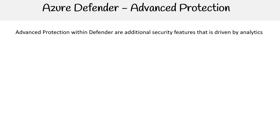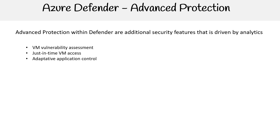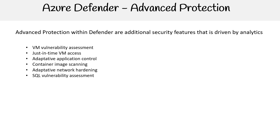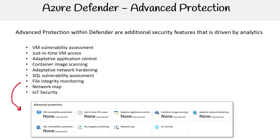For advanced protection within Defender, there are additional security features driven by analytics: VM vulnerability assessments, just-in-time VM access, adaptive application control, container image scanning, adaptive network hardening, SQL vulnerability assessment, file integrity monitoring, network map, and IoT security. You can see all these options below and whether they are turned on or not. We'll take a look at the network map in a moment.